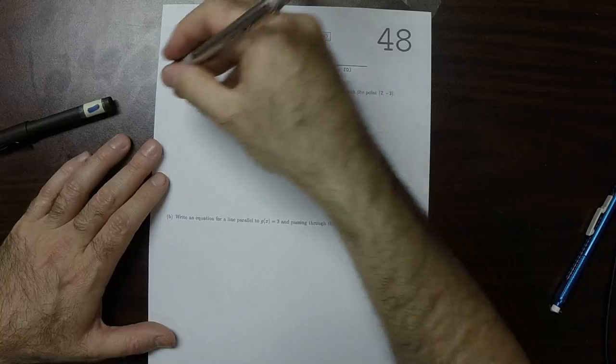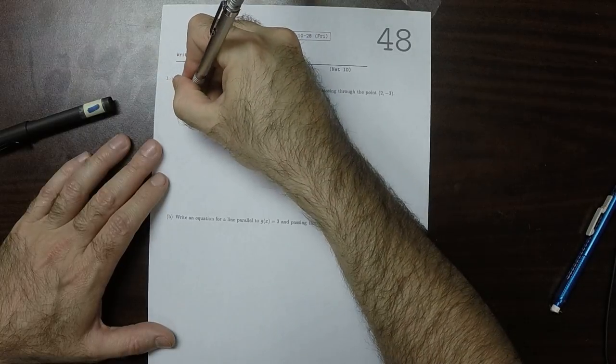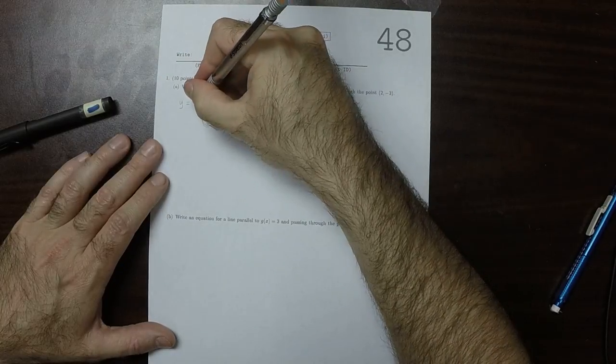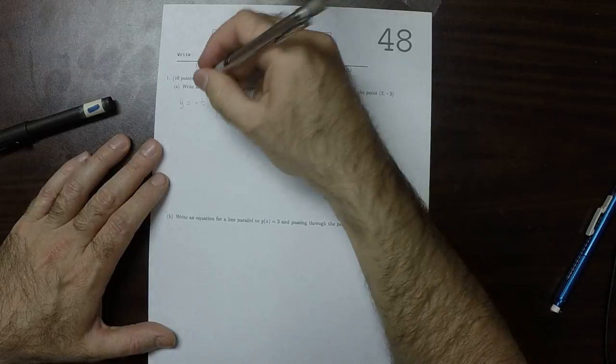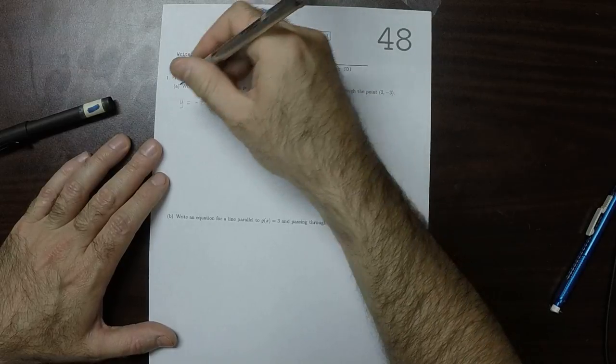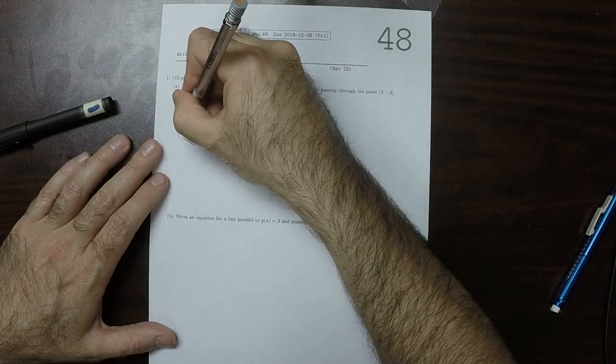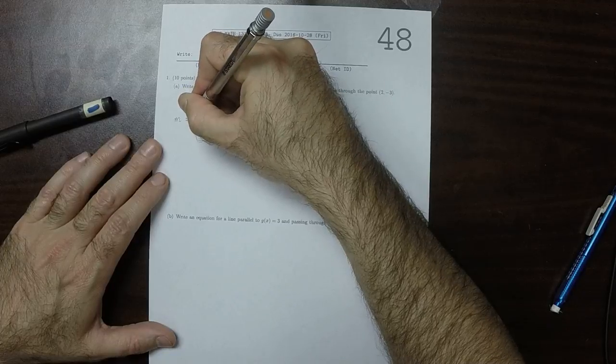So we're given this line: y is negative t plus 4. It has slope negative 1.